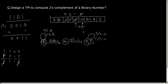From here, if I have blank, that means I have reached the leftmost thing here. That means I have completed computing the 2's complement. So I will not write anything and move towards right and reach the final state QF.